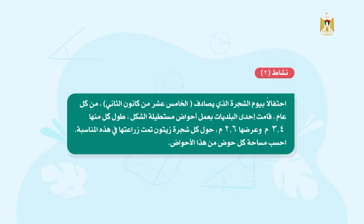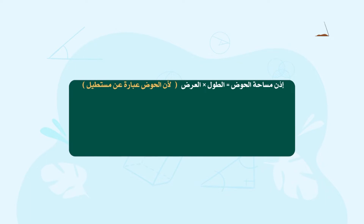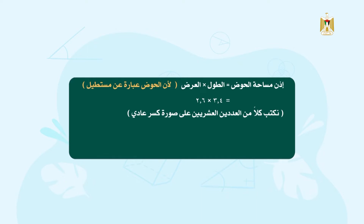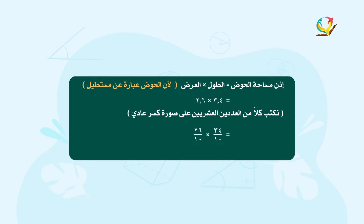المطلوب في المسألة هو إيجاد مساحة الحوض. نعلم أن مساحة الحوض مستطيل، لذلك ستكون مساحة الحوض تساوي الطول ضرب العرض، وتساوي 3 صحيح و4 من 10 ضرب 2 صحيح و6 من 10. الآن نكتب كل من العددين العشريين على صورة كسر غير حقيقي: 3.4 يصبح 34 على 10، و2.6 يصبح 26 على 10.